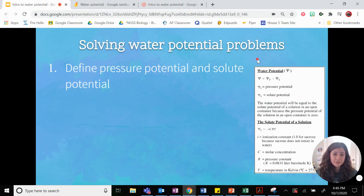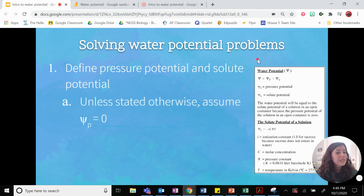So when you're solving these problems, the very first thing you want to do is see if the problem gives you the information you need to define the pressure potential and the solute potential. So remember, unless the problem says otherwise, because of this statement right here, you can assume that that pressure potential is going to equal zero.